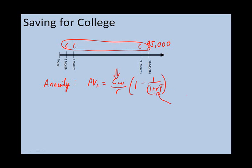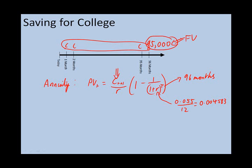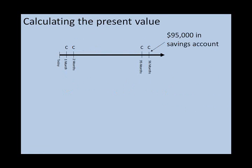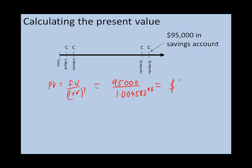We know what r is — r is going to be equal to 0.055 divided by 12, which is 0.004583. T we know is 96 months, and we want to find C. The problem is we don't have the present value; we only have the future value. To calculate the present value, we're going to use our present value/future value formula. Substituting in the numbers, we get 95,000 divided by 1.004583 to the power of 96, which equals $61,246.95.